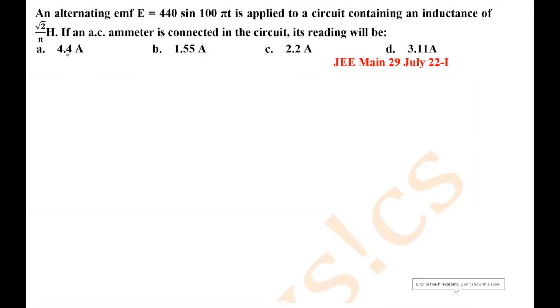An alternating EMF equal to 440 sin 100πt is applied to a circuit containing an inductance of √2/π henry. If an AC ammeter is connected in the circuit, its reading will be. So it is given that we have an alternating EMF whose value is 440 sin 100πt.